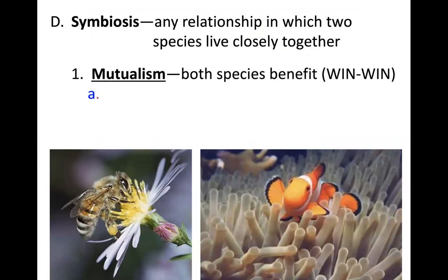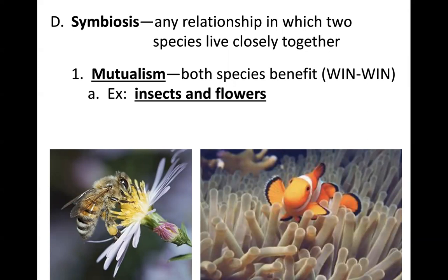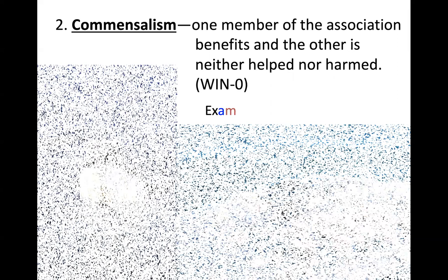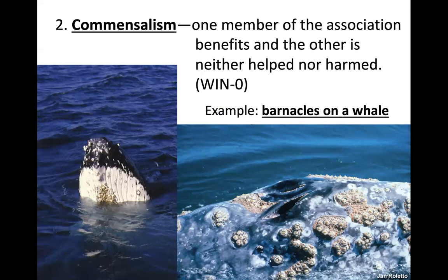The last relationship is symbiosis — a symbiotic relationship is any relationship in which two species live closely together. We see this in terms of mutualistic interactions, where both parties benefit. This is what we would consider a win-win situation. Examples of a mutualistic interaction would be flowers and insects — when we think about the process of pollination, this is absolutely a mutualistic interaction.